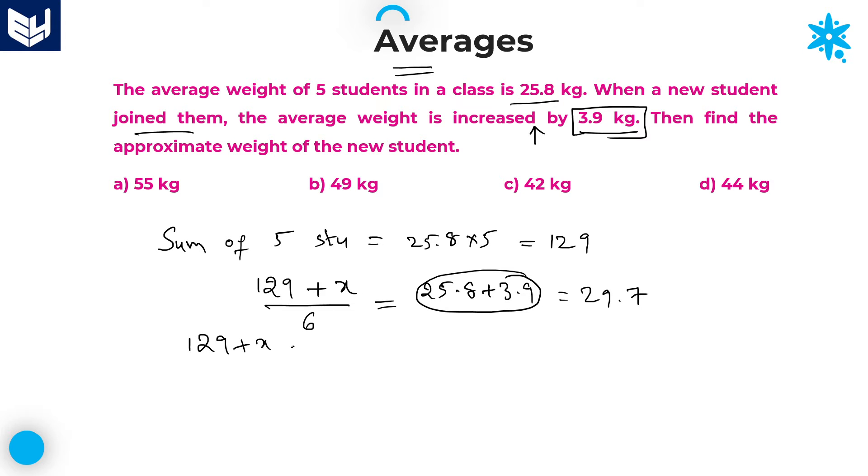Now you can do the cross multiplication. 129 plus x equals 6 into 29.7. That's 6 times 7 equals 42, next 6 times 9 equals 54 plus 4 equals 58, and next 6 times 2 equals 12 plus 5 equals 17, so 178.2. From this x equals 178.2 minus 129, that is equal to 49.2. x equals 49.2 kgs.